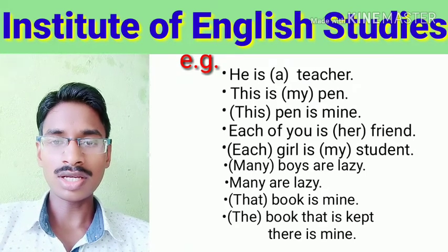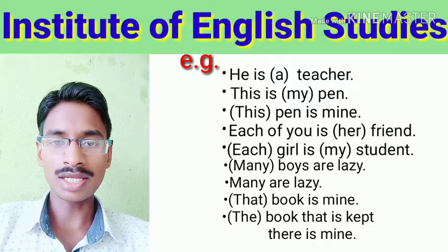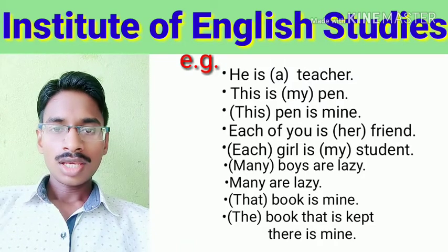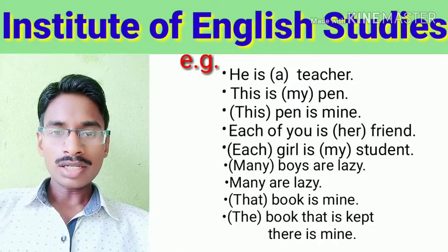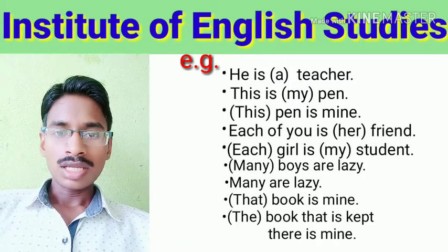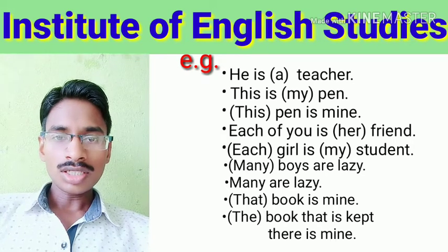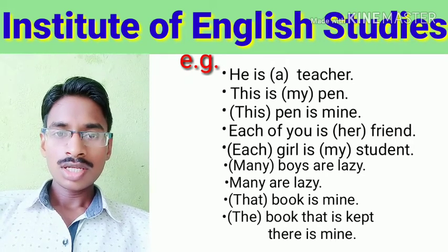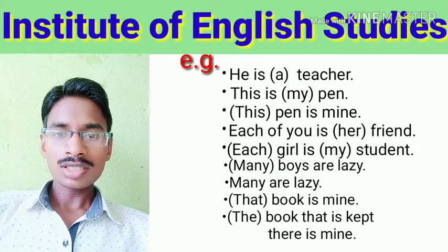In the sentence 'The book that is kept there is mine', 'the' is the determiner and 'book' is the noun. In this last sentence, 'that' is not a determiner because it doesn't take any noun.